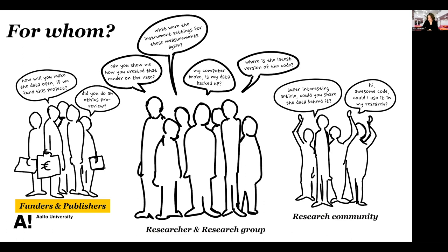If you're working with human participants in your research, a journal might require you to have done an ethics pre-review, which is something you should do before you start collecting your data. As you can see, there is a wealth — a cacophony of overlapping needs regarding your research data. When in practice it's just files on your computer, it may be difficult to figure out which things are relevant for you and your data in particular. So next, when we look at the data lifecycle in more detail, keep in mind these various interested parties.